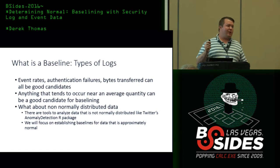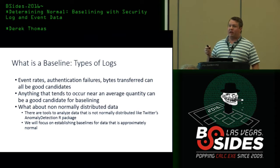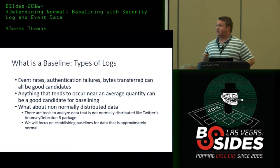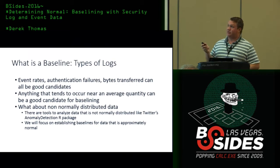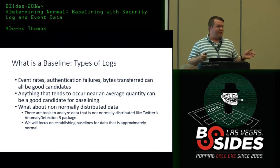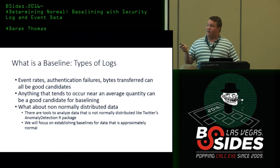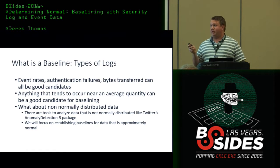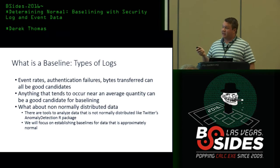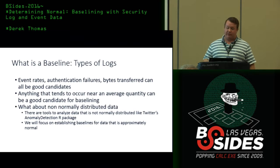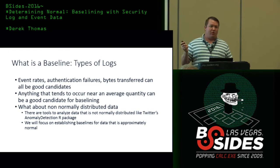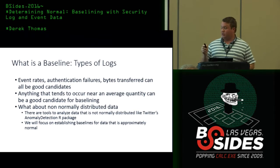What types of things can you baseline? Anything that occurs on average and will deviate above or below the average roughly equally — you need good symmetry. Things like event rates, authentication failures, maybe bytes transferred in a VPN session could be good candidates. For non-normally distributed data, there are other techniques — I'll show a tool called Twitter's Anomaly Detection for nonparametric data — but we'll focus on normally distributed data for creating thresholds.